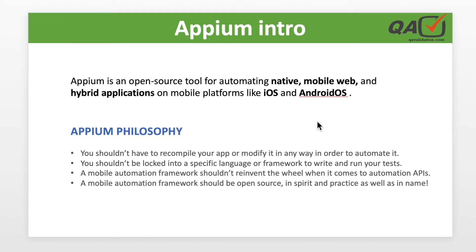We don't tell the developer or business owner to change things based on our test requirements - we take the application as a user would. The same concept applies to Appium: we are not recompiling or adding different things into the application to make it testable. We take the application as it is going to market. For example, when testing the Facebook mobile app, we are not asking Facebook to change anything.